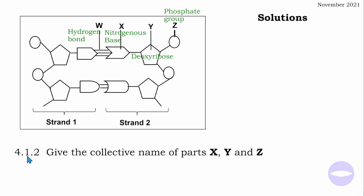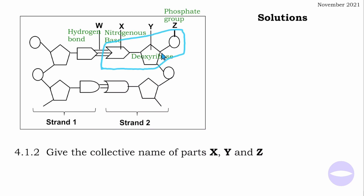Question 4.1.2: give the collective name of the parts X, Y, and Z. The part highlighted here — the collective name of this part is called a nucleotide.